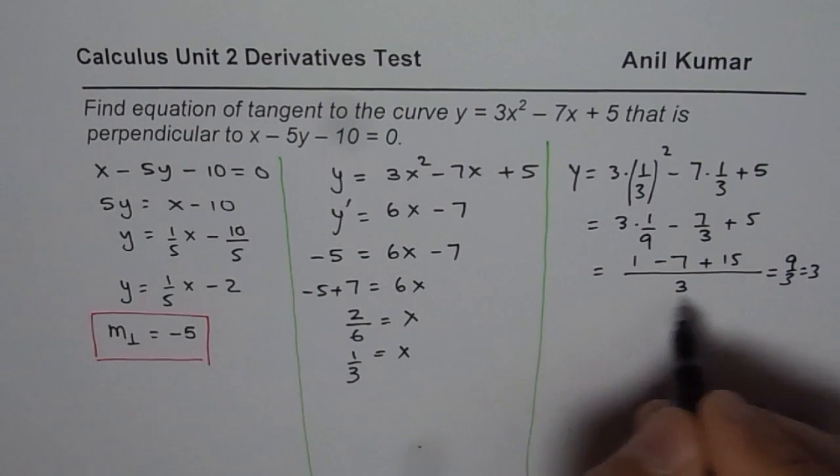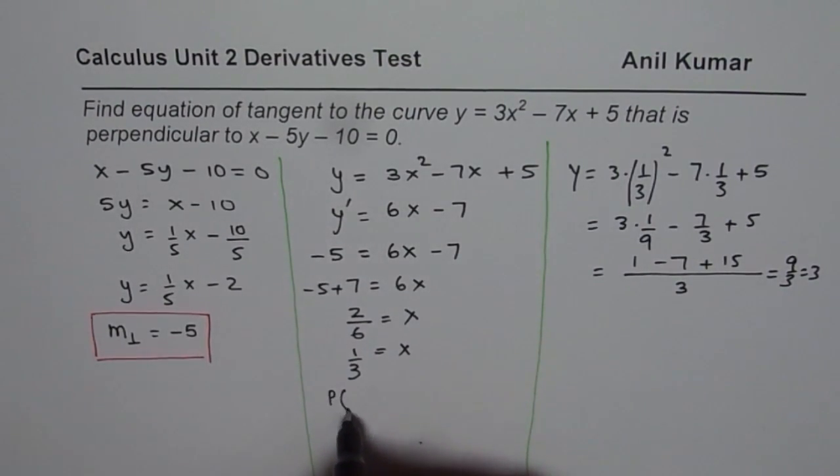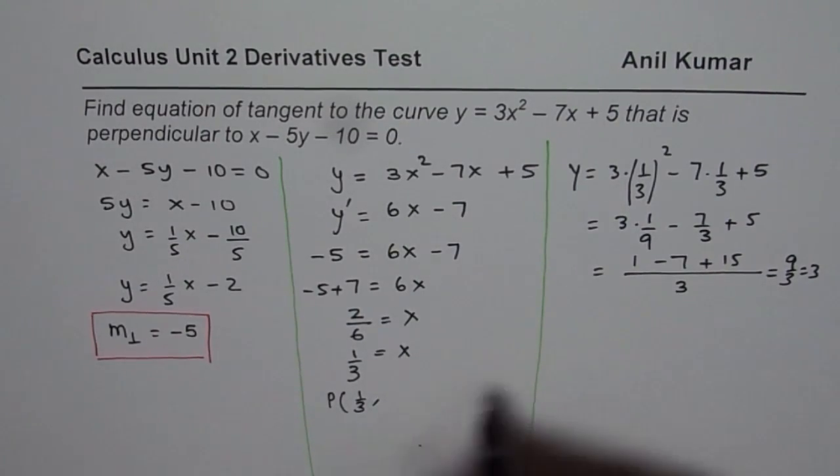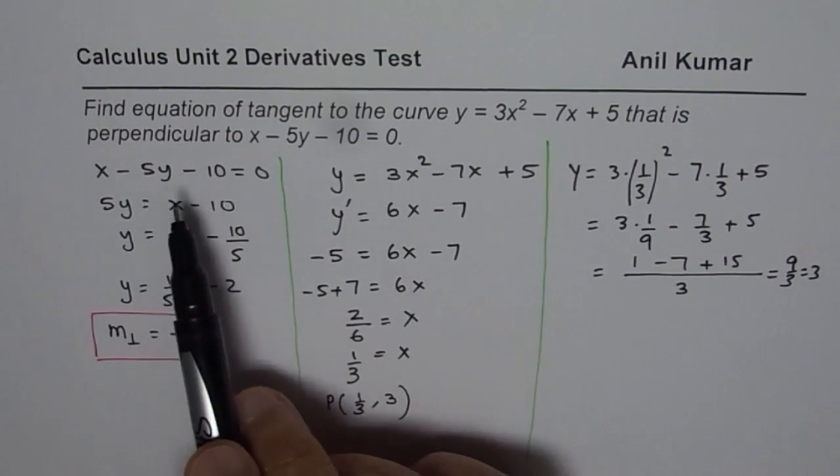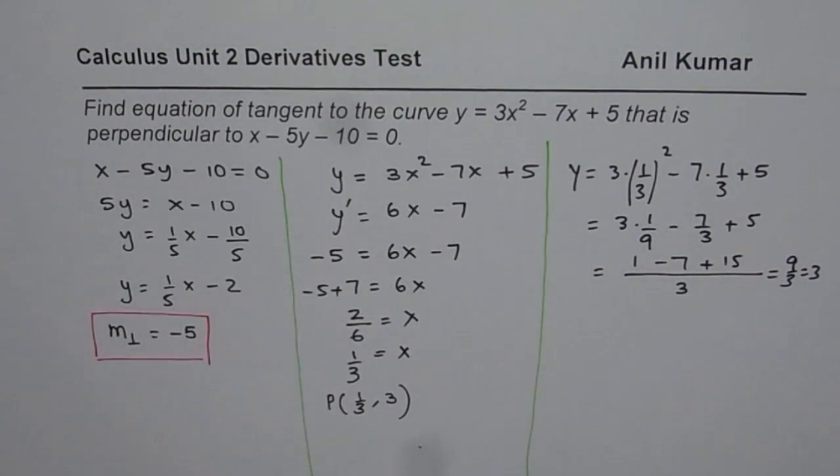So the point y is 3. So what we found from here is that the point for us is 1 over 3 for x and 3 for y. So that is the point on the curve where we have tangent perpendicular. You need to find the equation of tangent line.